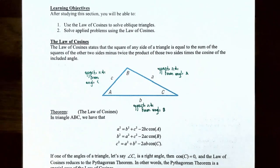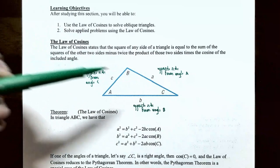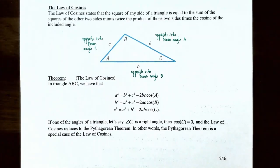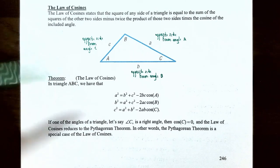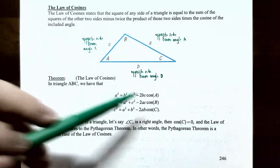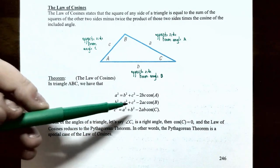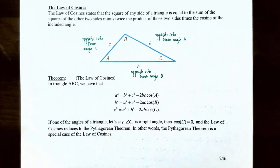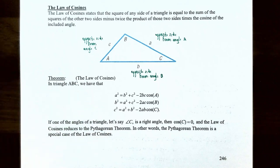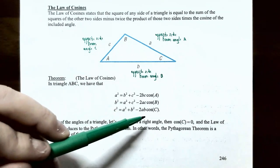To simplify notation, we label the oblique triangle so that side a is opposite angle A, side b is opposite angle B, and side c is opposite angle C. In triangle ABC we have three formulas: a² = b² + c² − 2bc·cos(A), b² = a² + c² − 2ac·cos(B), and c² = a² + b² − 2ab·cos(C).